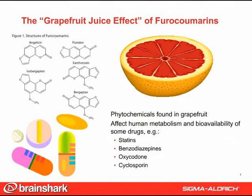Furocoumarins are a class of defensive phytochemicals found in grapefruit. They comprise a furan ring fused with coumarin. They are a problem because in humans they affect the metabolism and bioavailability of a number of drugs. This has been called the grapefruit juice effect.